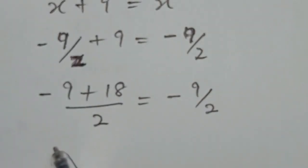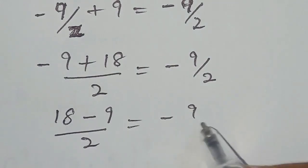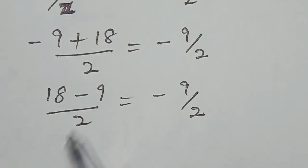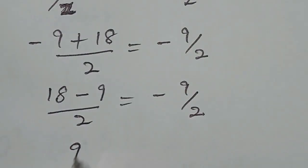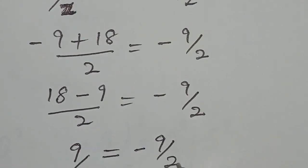Now, rewriting this properly, we have 18 minus 9 over 2 equal to minus 9 over 2. So, this 18 minus 9, we have 9 over 2 equal to minus 9 over 2,